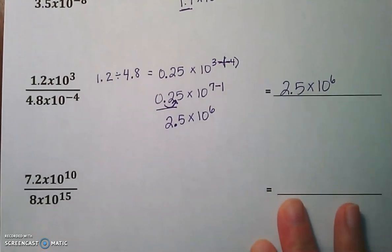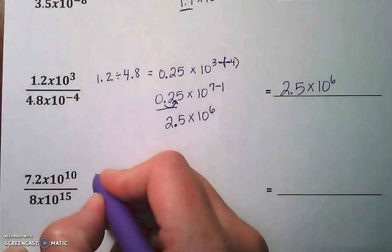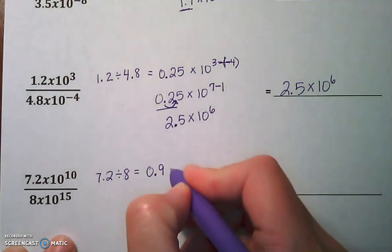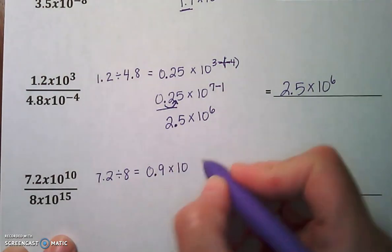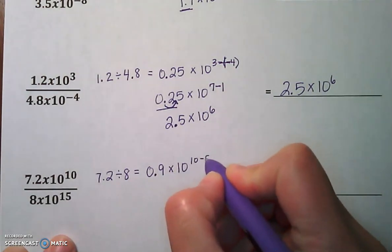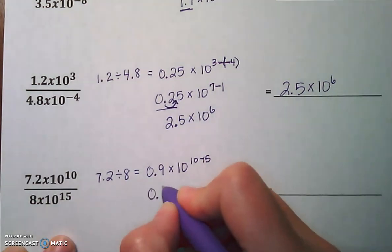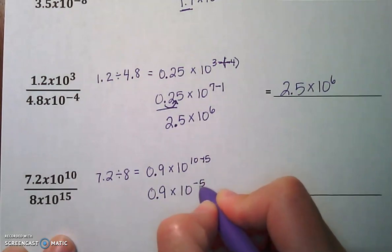We've got 7.2 times 10 to the 10th divided by 8 times 10 to the 15th. Let's go ahead and divide 7.2 divided by 8. That is going to give us 0.9. We keep our base of 10 and then we subtract the exponents, 10 minus 15. So that's going to give us 0.9 times 10 to the negative 5.